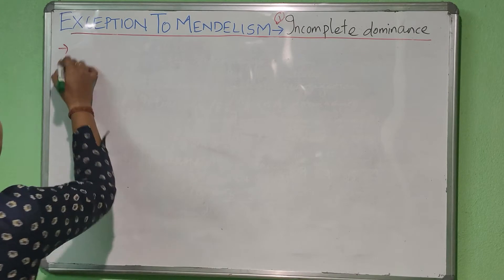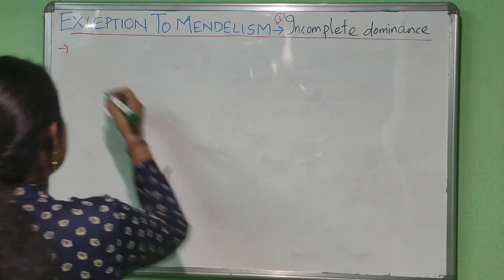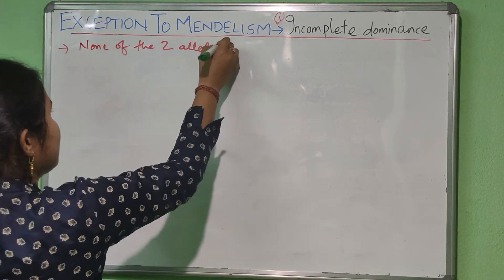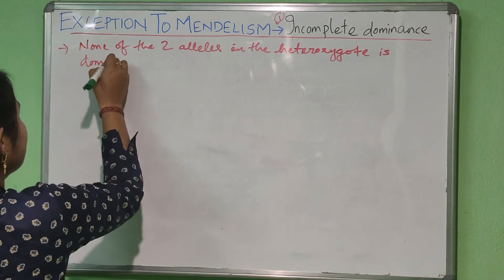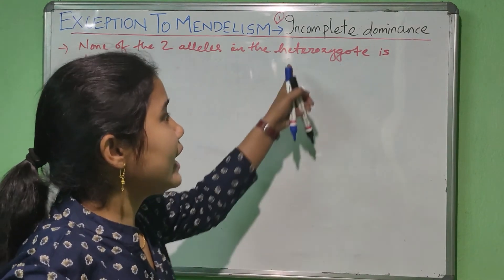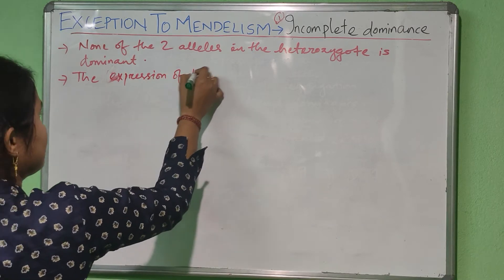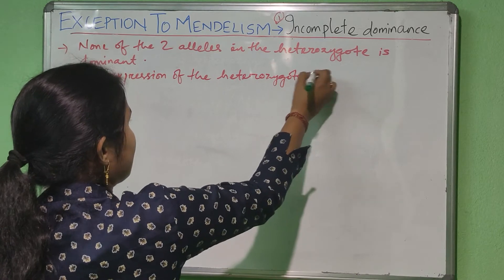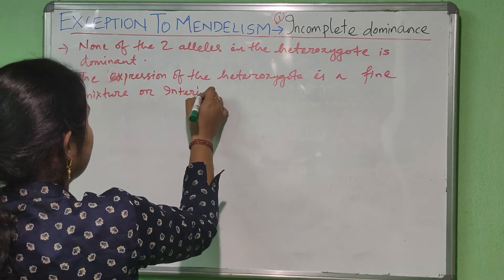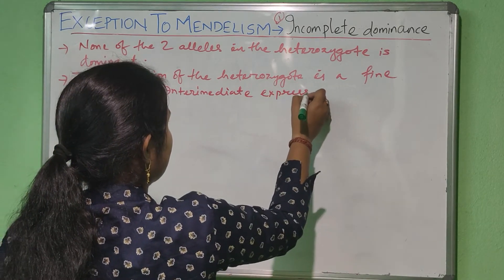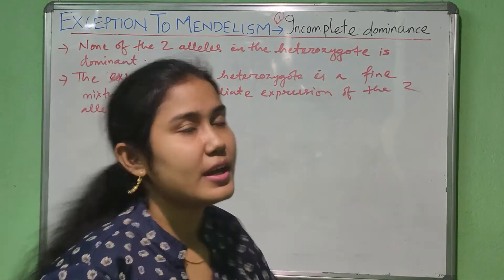So what does incomplete dominance say? It is a phenomenon in which none of the two alleles in a heterozygote is dominant. The expression of the heterozygote is a fine mixture or intermediate expression of the two alleles. This is the overall phenomenon of incomplete dominance.